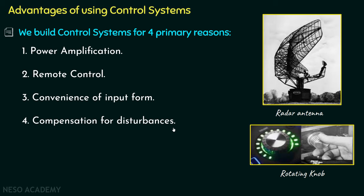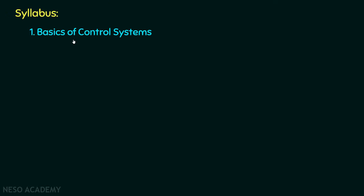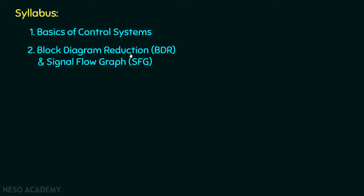Now we'll discuss the syllabus. We will first cover the basics of control systems, starting with system response characteristics — how the output varies with respect to the input — followed by an introduction to open loop and closed loop systems and their comparison. Then we'll review signals and systems, focusing on the Laplace transform and its properties, the transfer function of any LTI system, the concept of feedback and types of feedback, sensitivity of control systems, and the concept of dominant pole. The next chapter will be block diagram reduction and signal flow graph, covering basic reduction rules and Mason's gain formula.